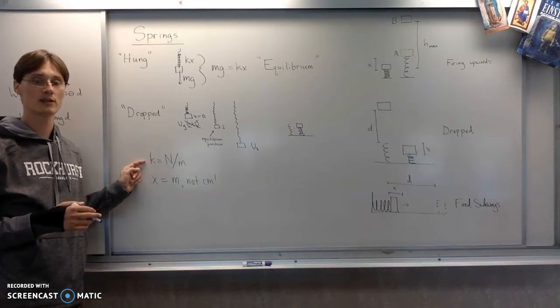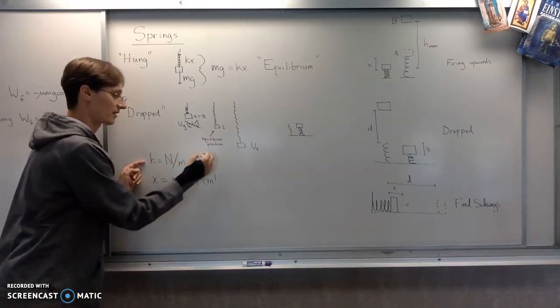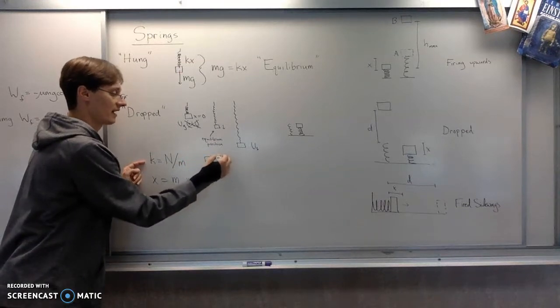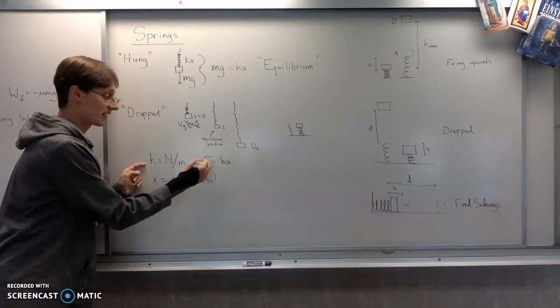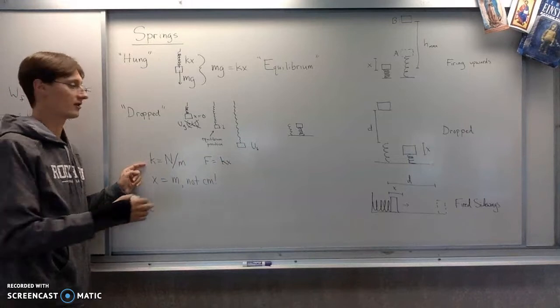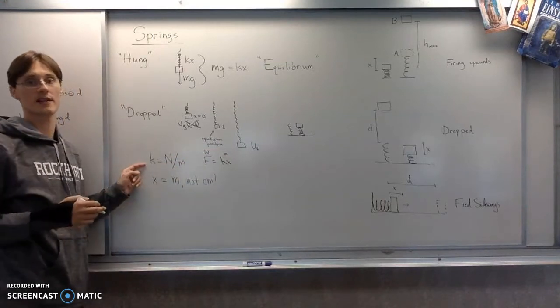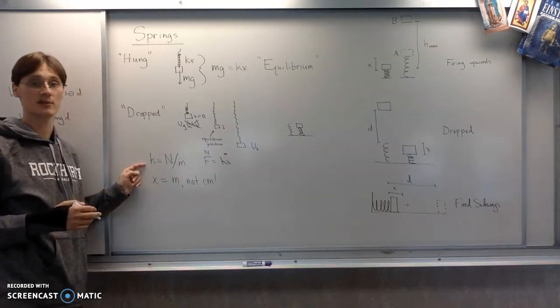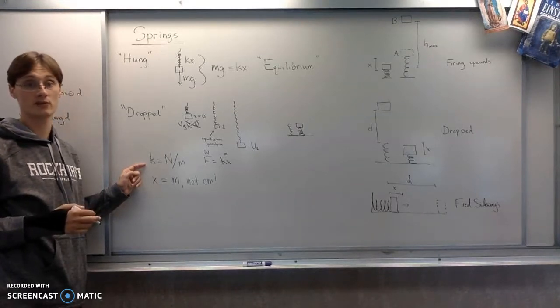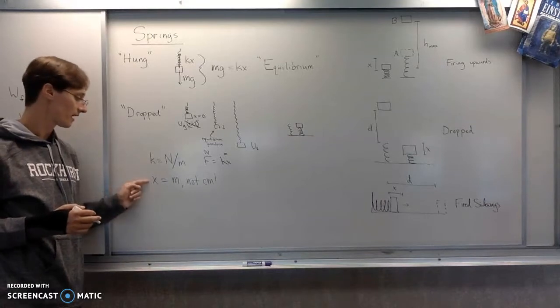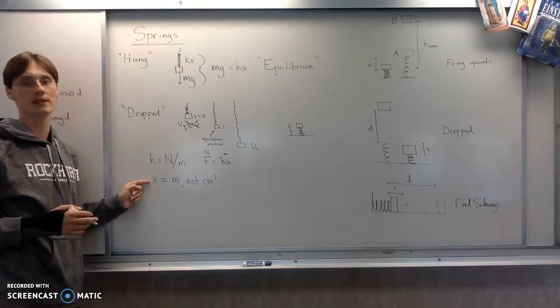The spring constant is measured in newtons per meter. That comes from Hooke's law, which says that f equals kx. I know it says negative kx, but the negative sign is usually not important for these questions. That means that k is f over x, and f is measured in newtons. And position, or extension rather, is measured in meters. So that means a spring constant is newtons per meter. So if they gave you kilonewtons per meter or something like that, you have to convert that to regular newtons per meter.